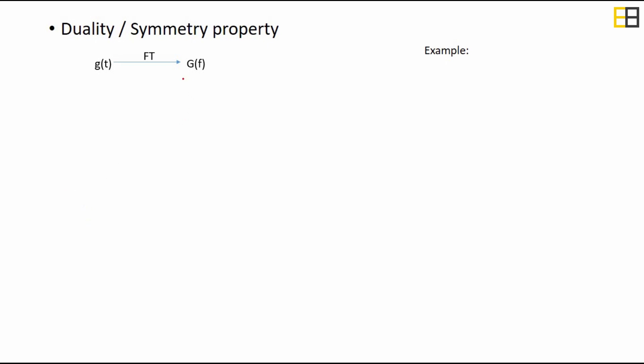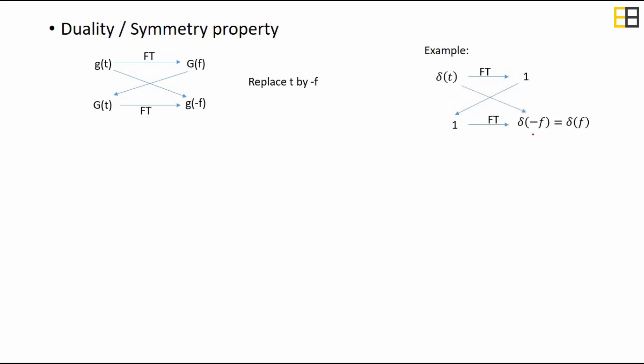The next property is the duality or symmetric property. The Fourier transform of a signal g(t) is G(f). Now if we take the Fourier transform of G(t) by replacing f with t, we get G(−f), obtained by replacing t with −f. For example, the Fourier transform of δ(t) is 1. Taking the Fourier transform of 1 gives δ(−f), and since δ(−f) equals δ(f), we can also say that the frequency of a constant or DC signal is zero.